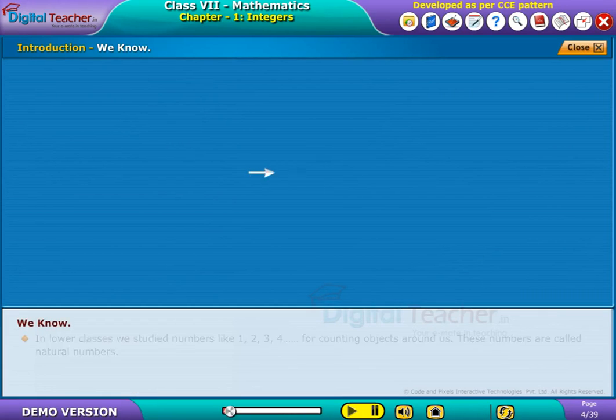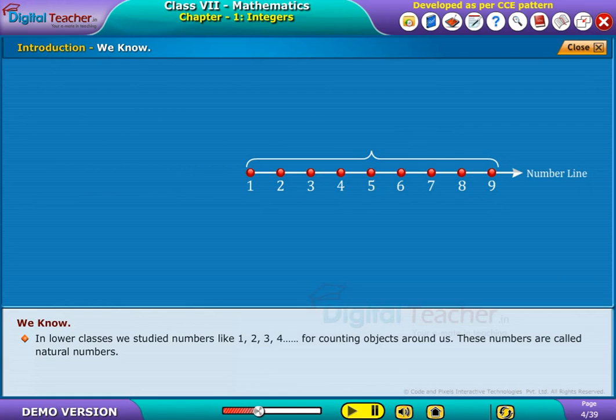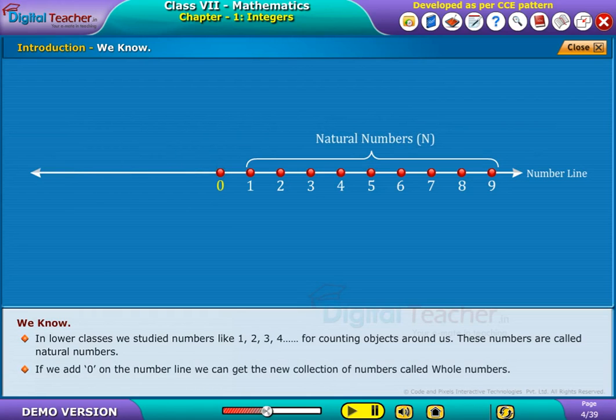We know in lower classes we studied numbers like 1, 2, 3, 4 and so on for counting objects around us. These numbers are called natural numbers. If we add 0 on the number line, we can get the new collection of numbers called whole numbers.